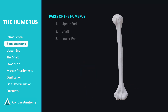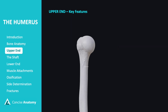Classified as a long bone, the humerus has three key parts: the upper end, the shaft, and the lower end. The upper end has five key anatomical features. Let's explore them one by one.